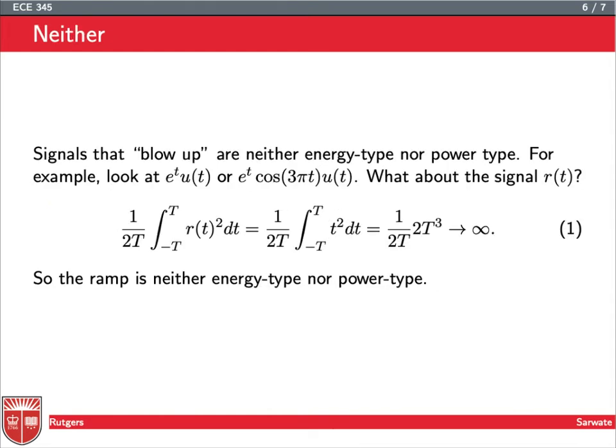So what about signals that are neither power-type nor energy-type? Those are signals that blow up. So for example, if you have an increasing exponential multiplying a unit step or multiplying a cosine, those are all going to blow up over time because we can see, again, drawing a picture helps. If we have something like this and we have our cosine wiggling around between two blowing up exponentials, you can see the energy and the power are going to shoot off to infinity.